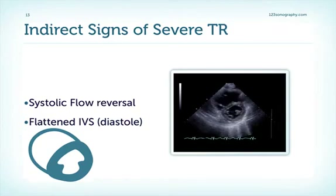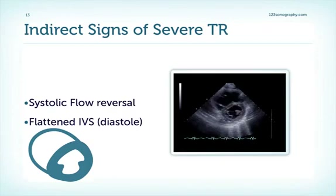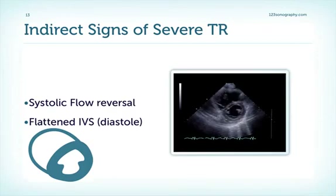Note that we can also have a combination of systolic and diastolic flattening. In that case, we usually have both volume and pressure overload of the right ventricle.